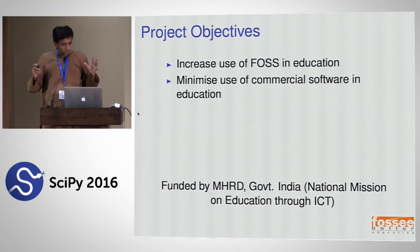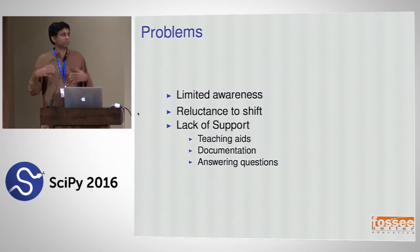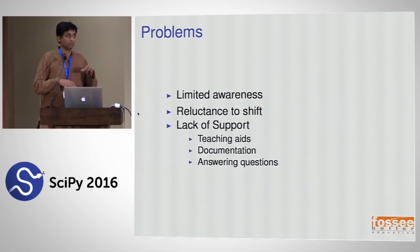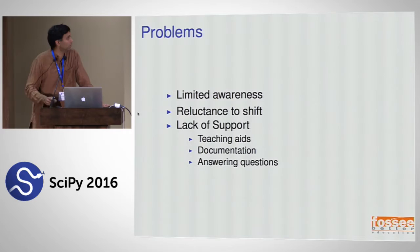The project objectives are to increase the use of FOSS in education and minimize the use of commercial software in education. That's the big goal, though it's obviously a very nebulous and large one. So what are the problems in India? Well, there's a lack of funding — a lot of people buy MATLAB licenses. There's limited awareness of what the alternatives are, and there's a reluctance to shift because instructors in colleges have too much on their hands. They typically teach several courses, which is not like US universities where teachers may have lighter loads.